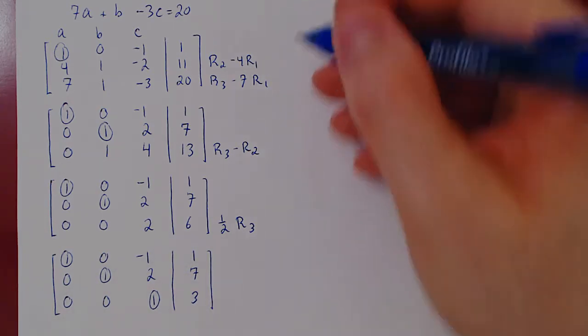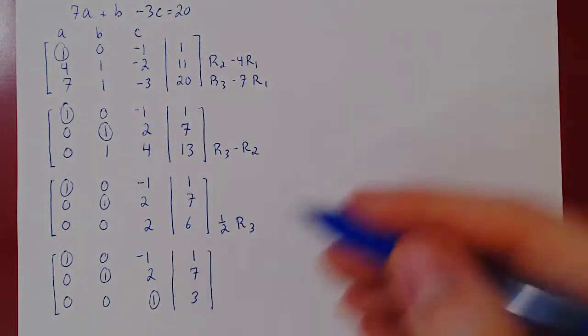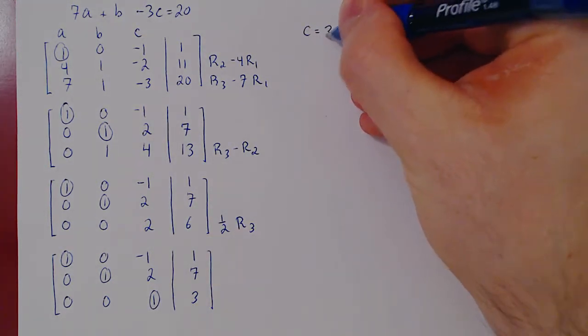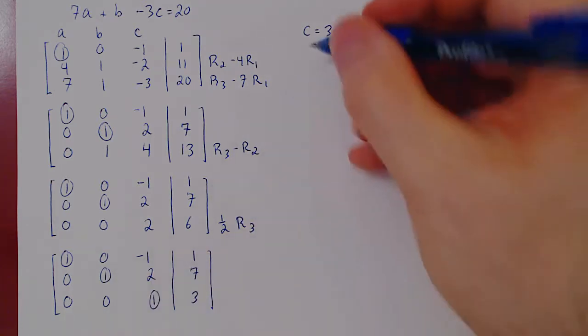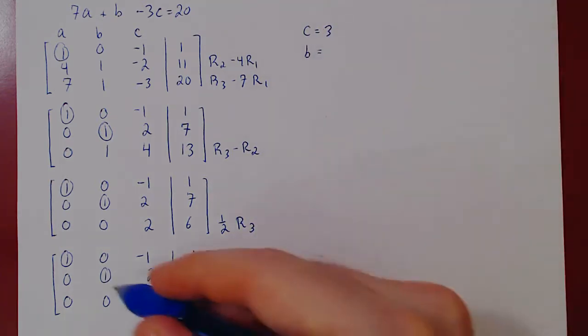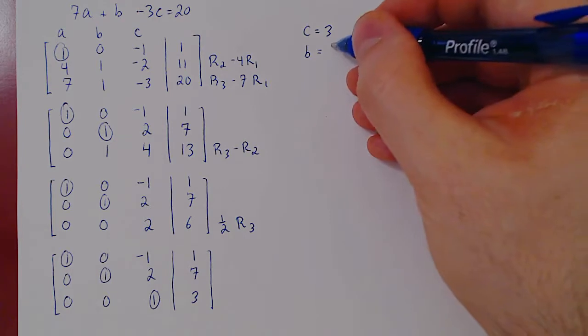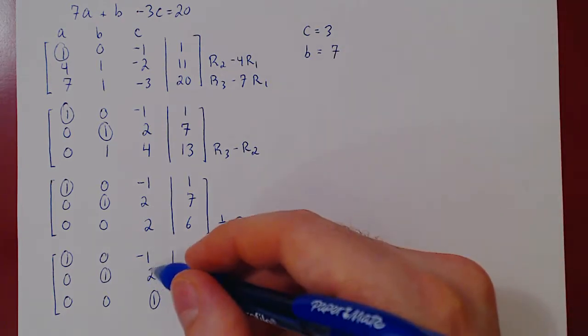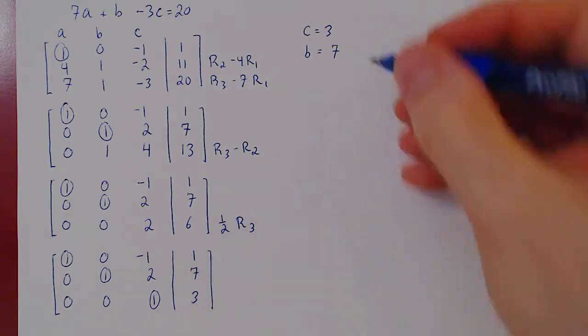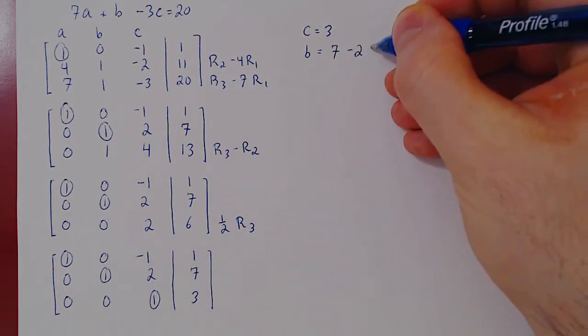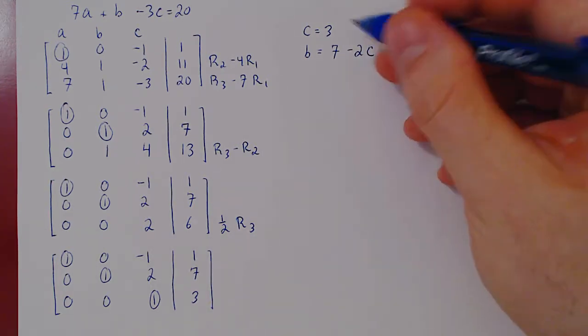Let's do it here. Let's first solve for c. So c equals 3. Then we'll solve for b. So b equals 7. There's a positive 2c on the left. Sent to the right becomes a negative 2c.